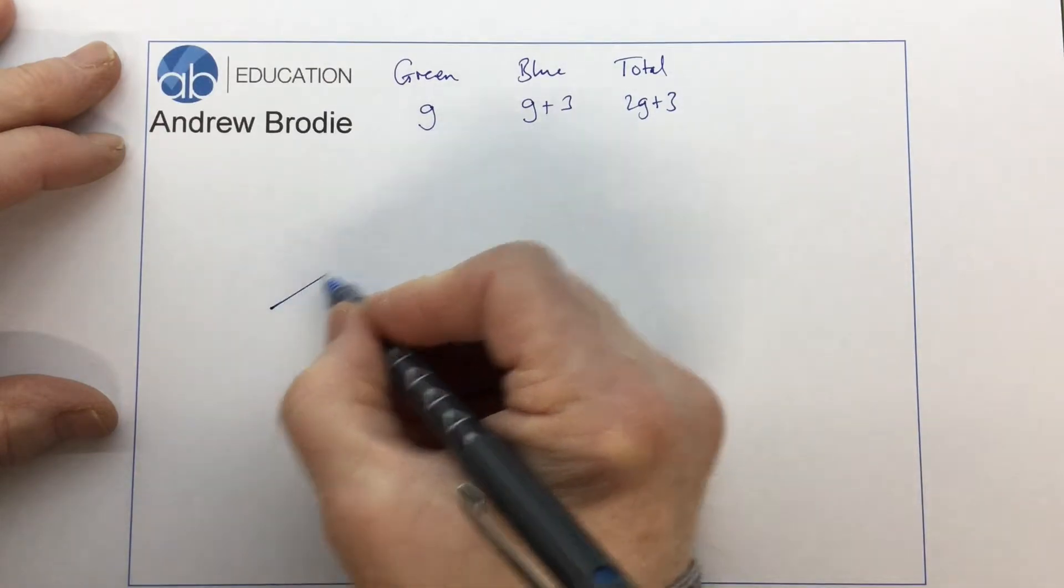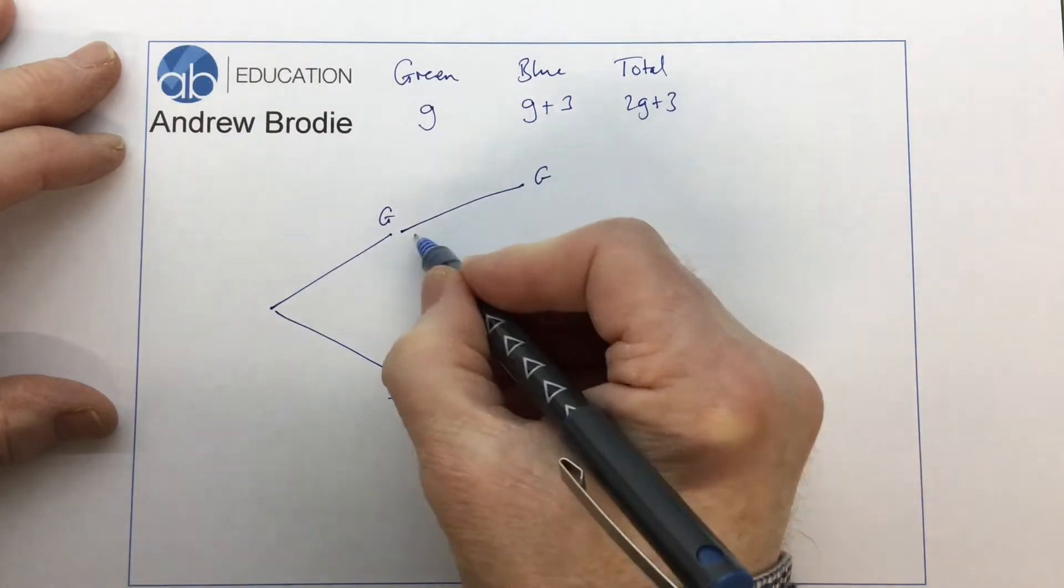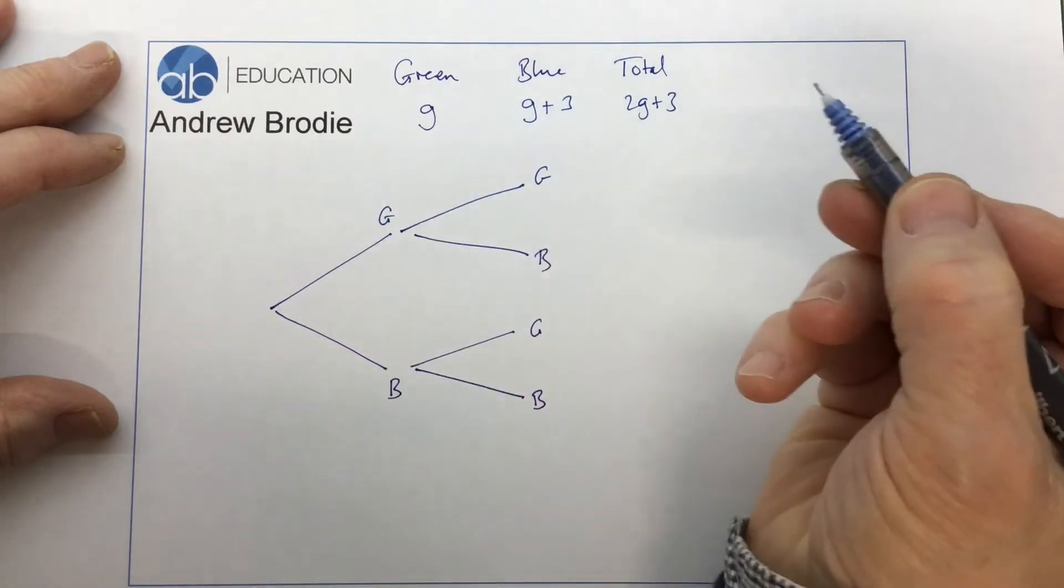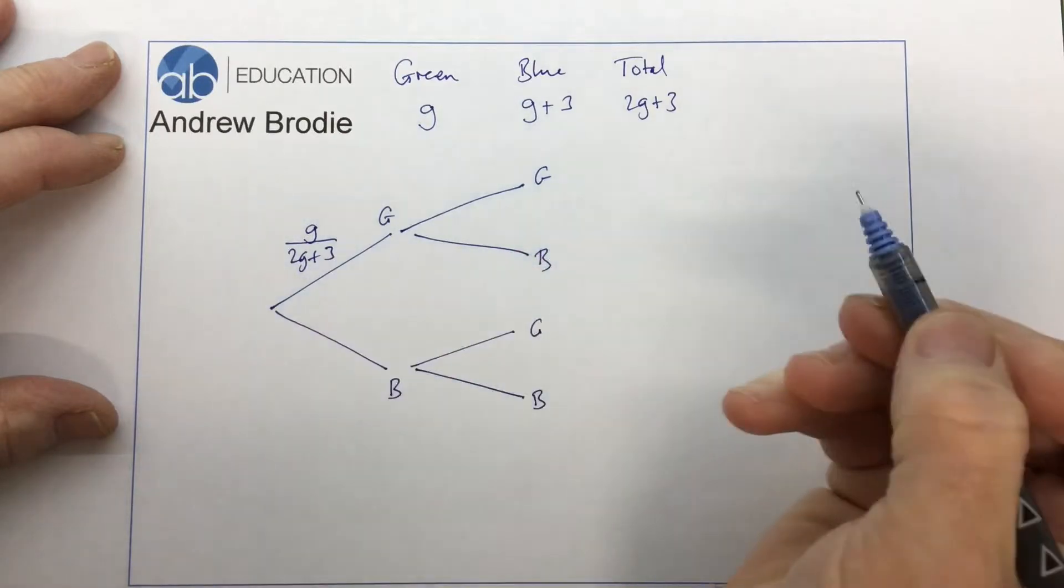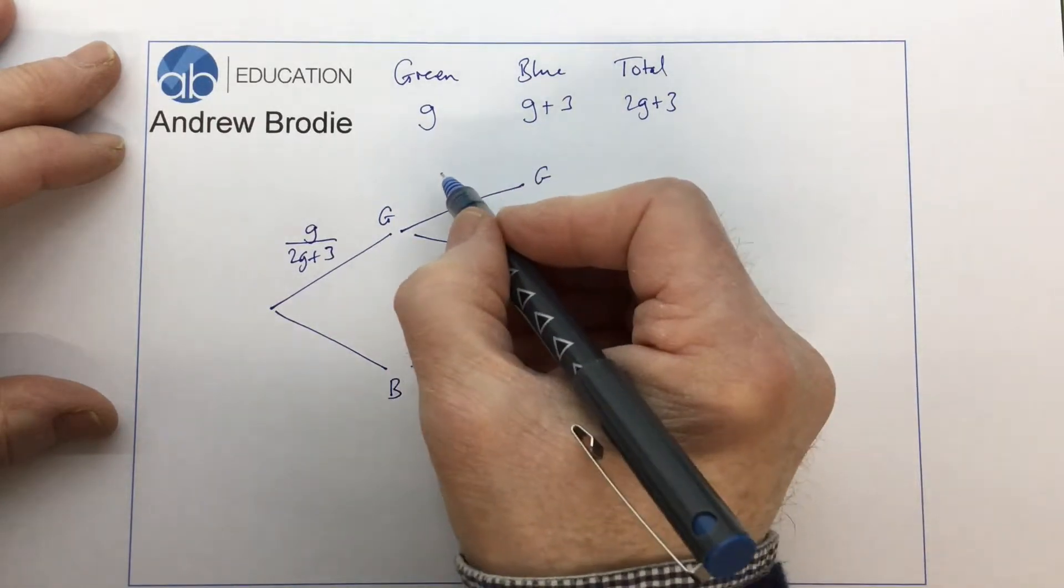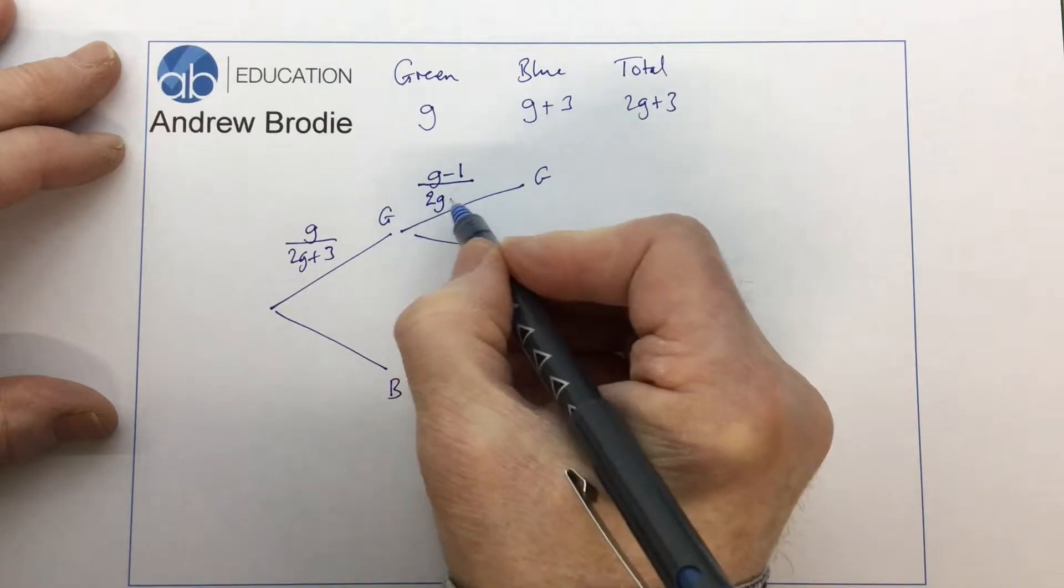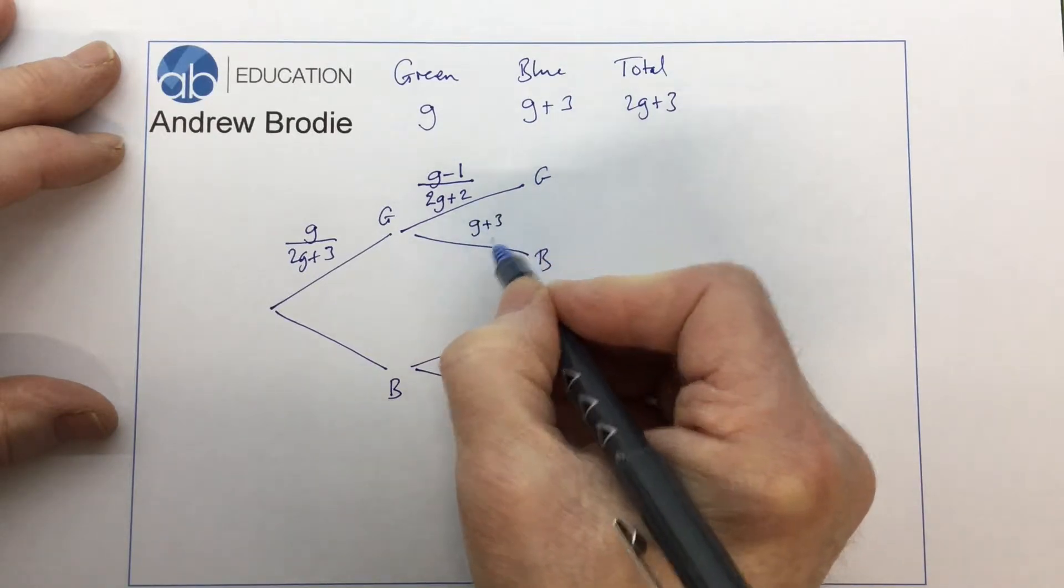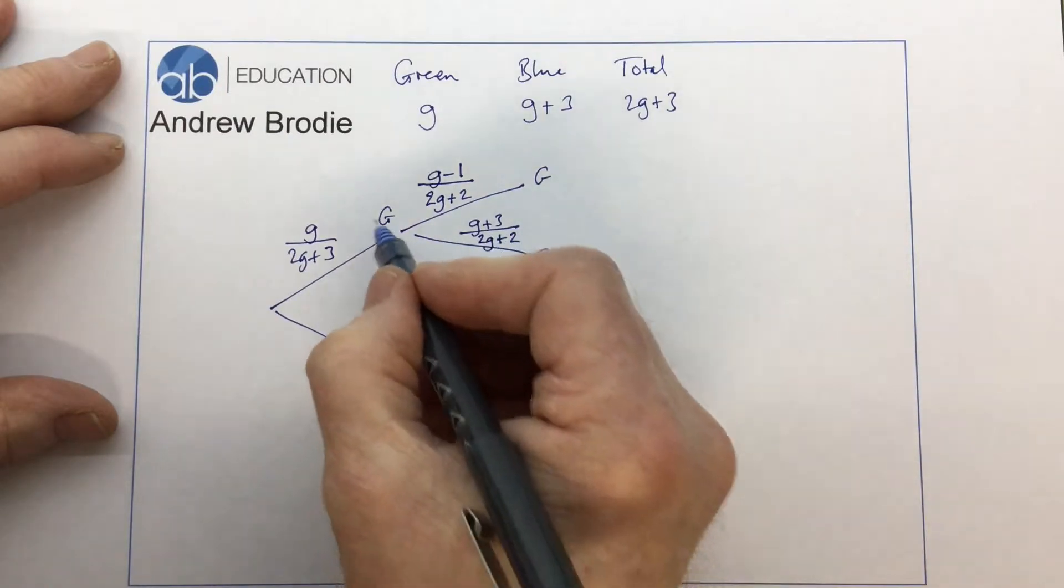So we're going to draw a tree diagram. Green, blue, green, blue, green, blue. Now for it to be a green pen on the first pick, the probability of that occurring is g out of 2g plus 3. There are 2g plus 3 pens altogether and there are g green pens. On the second pick though, there's now one less green pen, so it's g minus 1, and there's one less pen, so we've got a total of 2g plus 2. On the second pick if we go for blue, we've still got g plus 3, and we've also got 2g plus 2 as the total because we've already taken a green one.